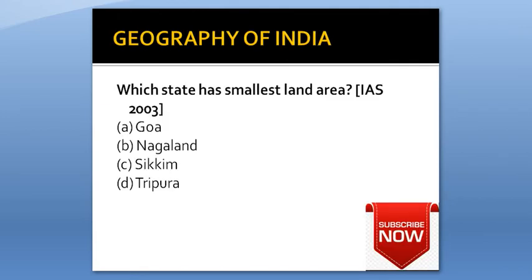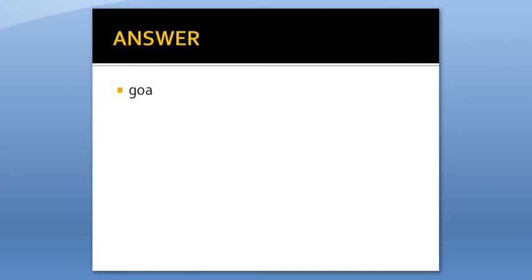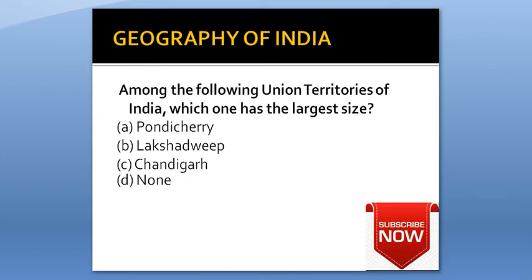Which state has the smallest land area? Option A: Goa. Option B: Nagaland. Option C: Sikkim. Option D: Tripura. Answer is Goa.